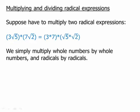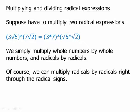So we'll group the 3 and the 7 together, and separately we'll group the √5 and the √2 together. And of course, we multiply right through the radicals, so 3 times 7 is 21, √5 times √2 is √10. We get 21√10.